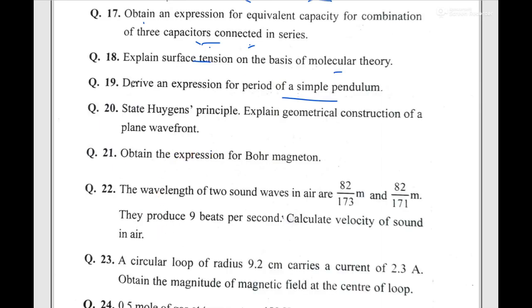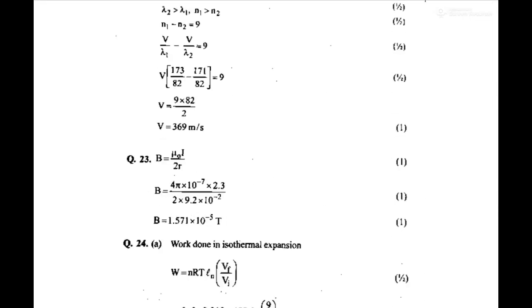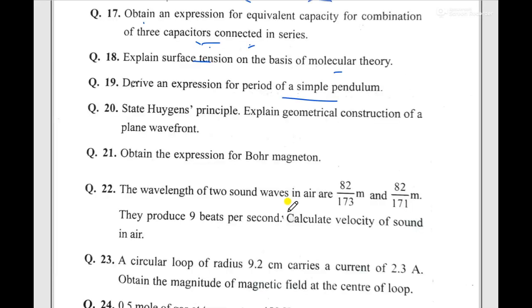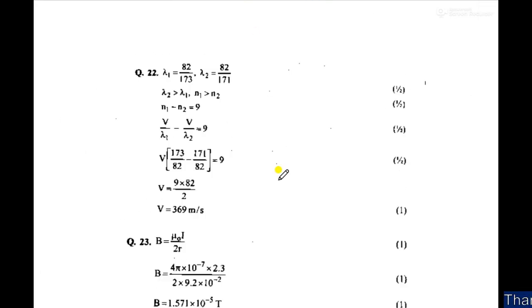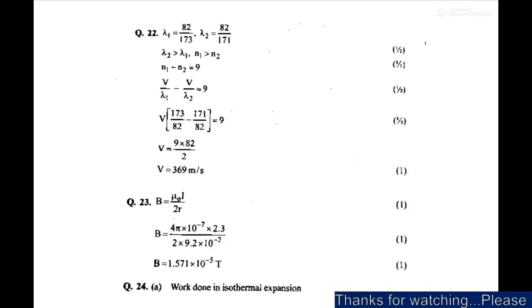Question 21 asks for the expression for Bohr Magneton — the derivation and expression are shown. Question 22 is a numerical on beats and calculating velocity of sound in air — a common question. Marks bifurcation: formula step carries one mark, and the final answer with the unit carries the remaining mark.